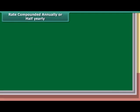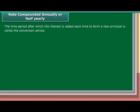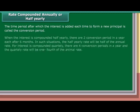Rate compounded annually or half yearly: The time period after which interest is added each time to form a new principal is called the conversion period. When interest is compounded half yearly, there are two conversion periods in a year, each after six months, and the half yearly rate will be half of the annual rate. For interest compounded quarterly, there are four conversion periods in a year and the quarterly rate will be one-fourth of the annual rate.